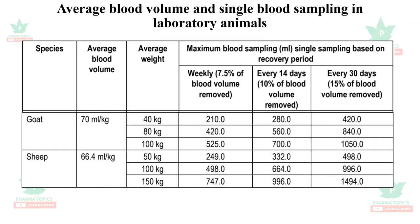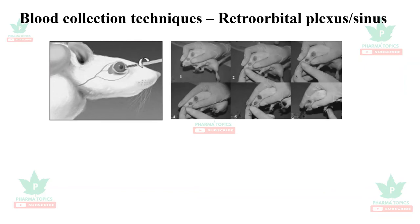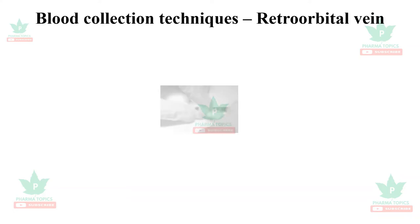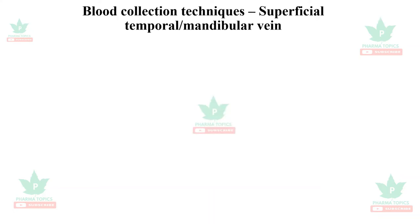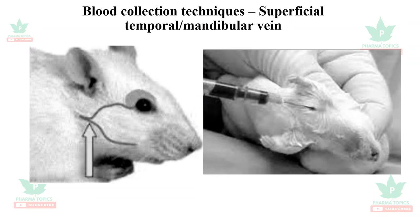The first blood collection technique is retroorbital plexus or sinus collection, near the eye, using a vacutainer. The next technique is superficial temporal or mandibular vein collection, performed near the mandibular region in case of mice and rats.